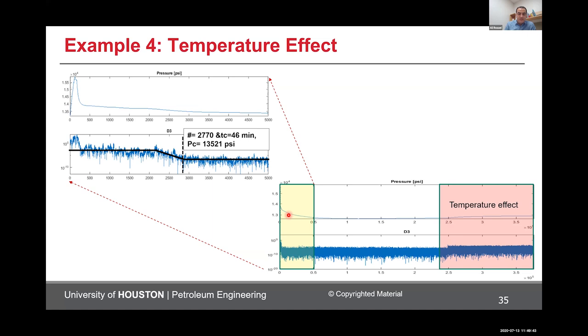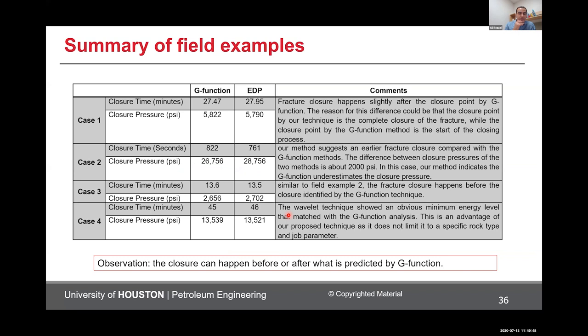To summarize what I showed for DFIT, here are four different cases comparing closure time and pressure using g-function and the energy density plot wavelet transform. One observation is that the closure can happen before, after, or at the same time as g-function picks it — we do not control that, and the method will identify it. We don't control when the fracture closure should happen.